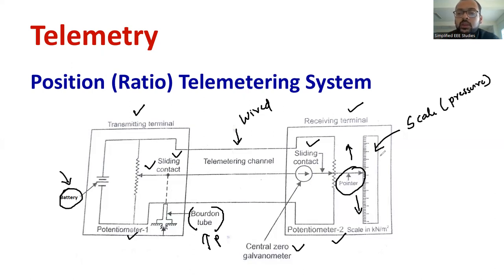So here we have a particular scale where you can see the value of pressure. Suppose the pressure information related to pressure need to be transmitted from the sending end side to receiving end side. This type of telemetry system will be helpful to transmit the information from sending end to receiving end with the help of two potentiometers. This type of arrangement is known as position or ratio telemetry system.